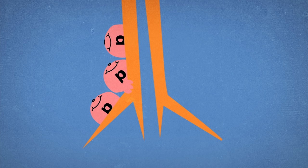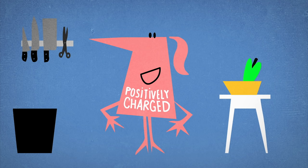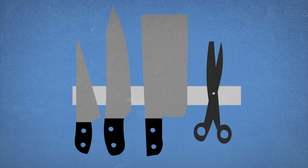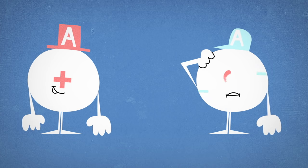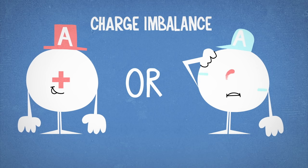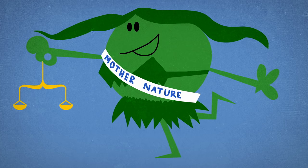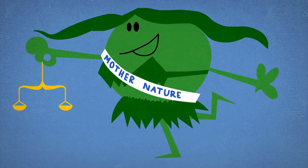...the first object is left with more protons than electrons and becomes positively charged, while the one with more electrons accumulates a negative charge. This situation is called a charge imbalance or net charge separation. But nature tends towards balance.